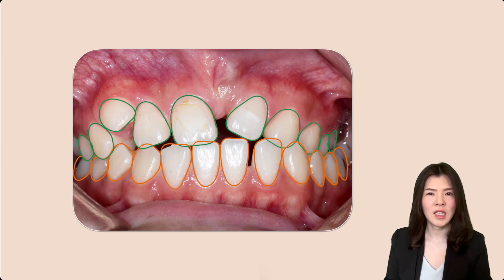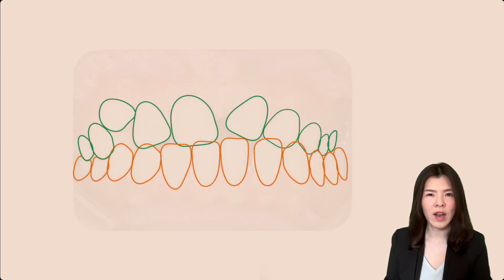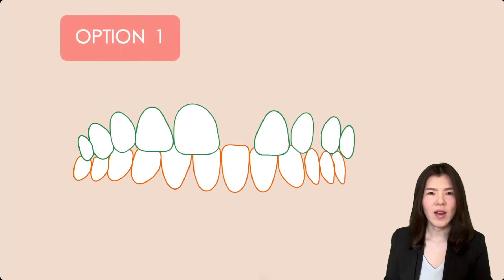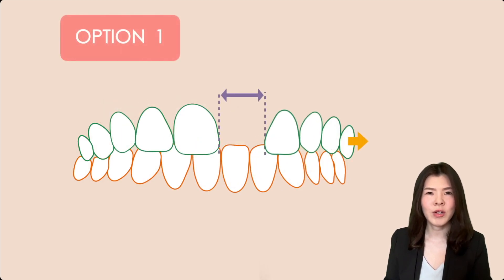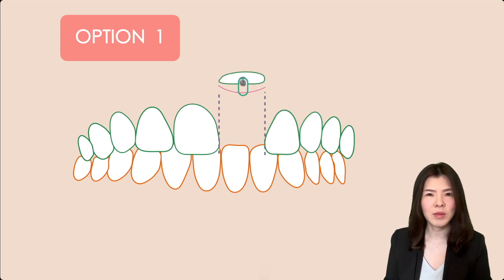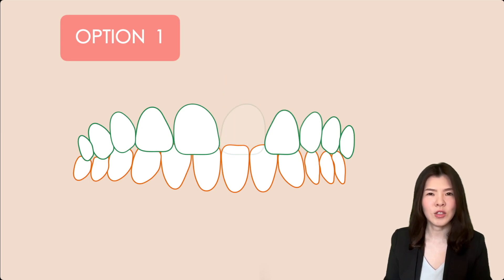Five treatment alternatives were proposed. Option one: maxillary arch expansion to create space, together with the closed eruption technique for the assisted eruption of the maxillary left central incisor into position.